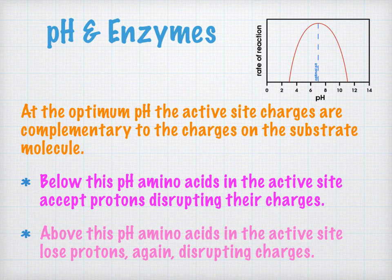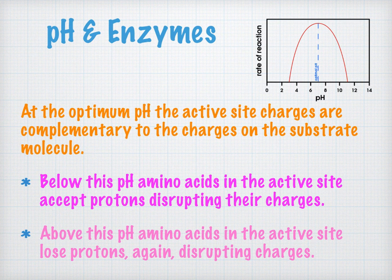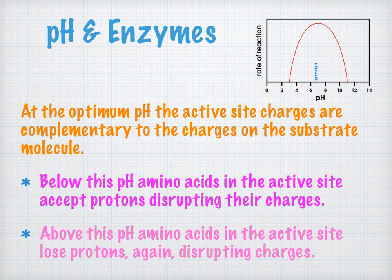At pHs above the optimum, amino acids are going to lose protons from the carboxylic acid group. This results in more negative charges, meaning the active site charges are not complementary to the charges on the substrate molecule, slowing the reaction. Both extreme pHs — very acidic and very alkaline conditions — will cause the enzyme to be denatured, permanently disrupting the structure of the active site.